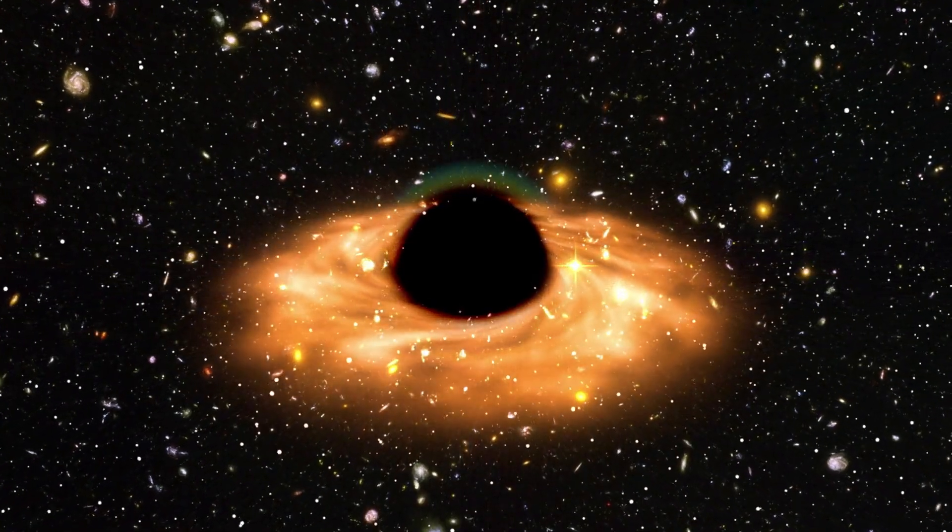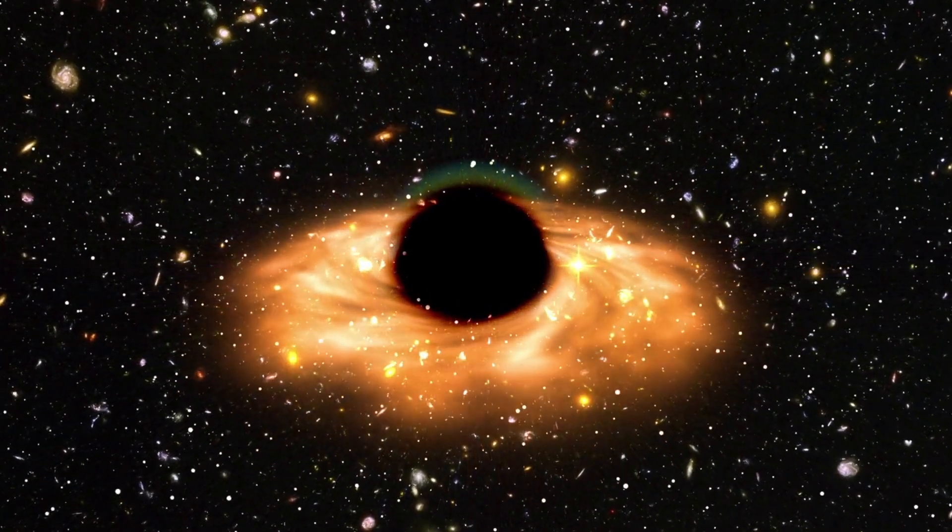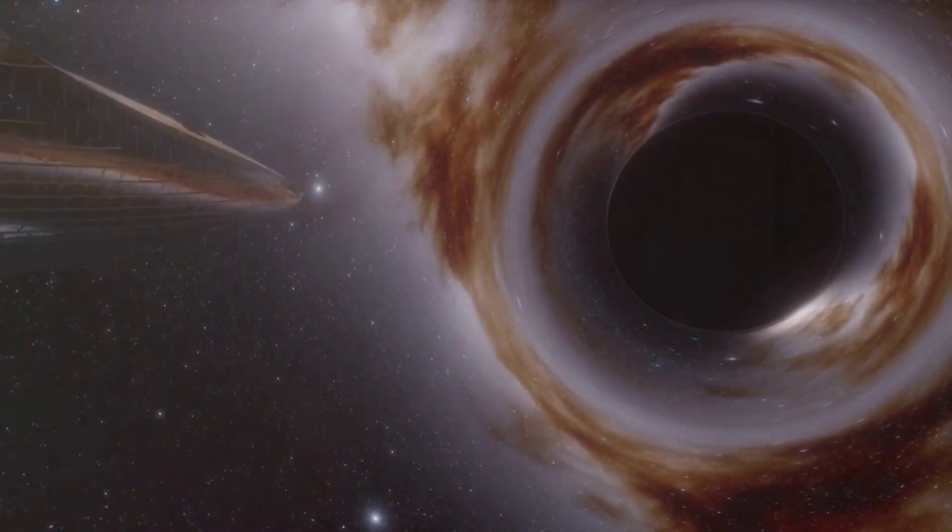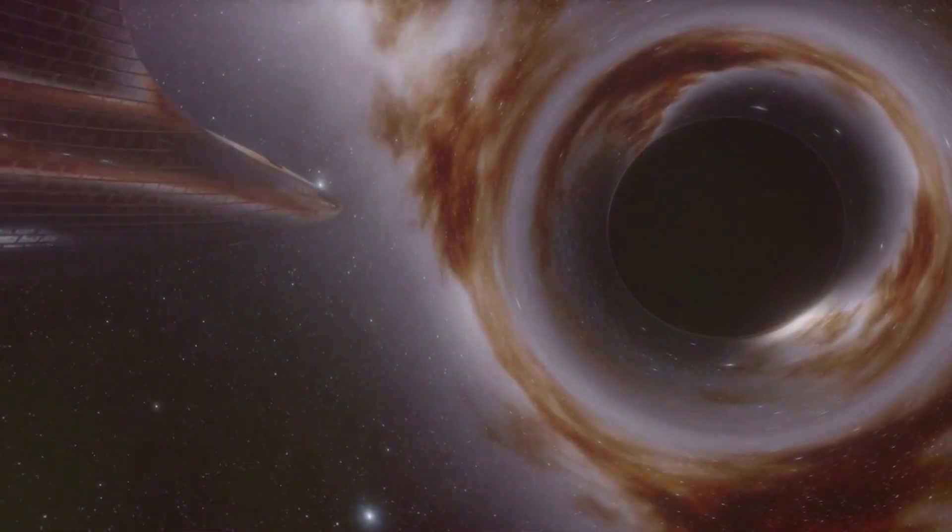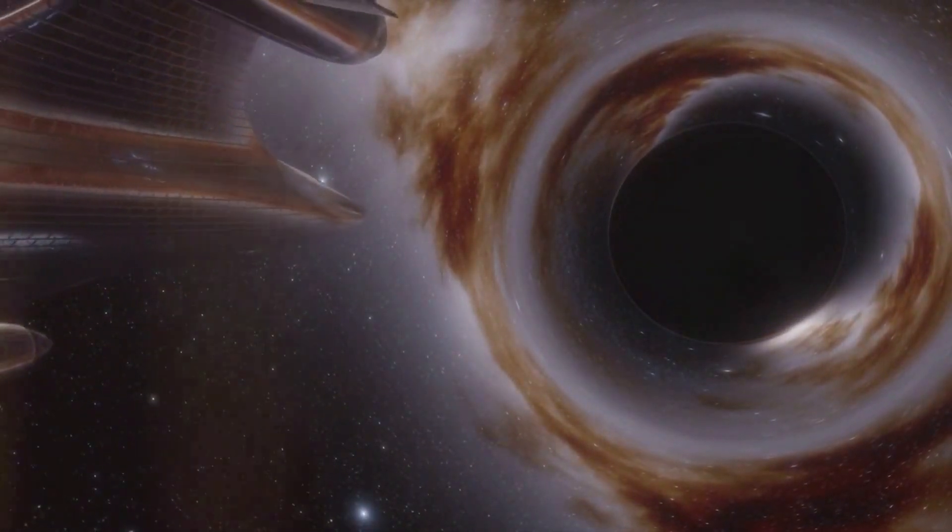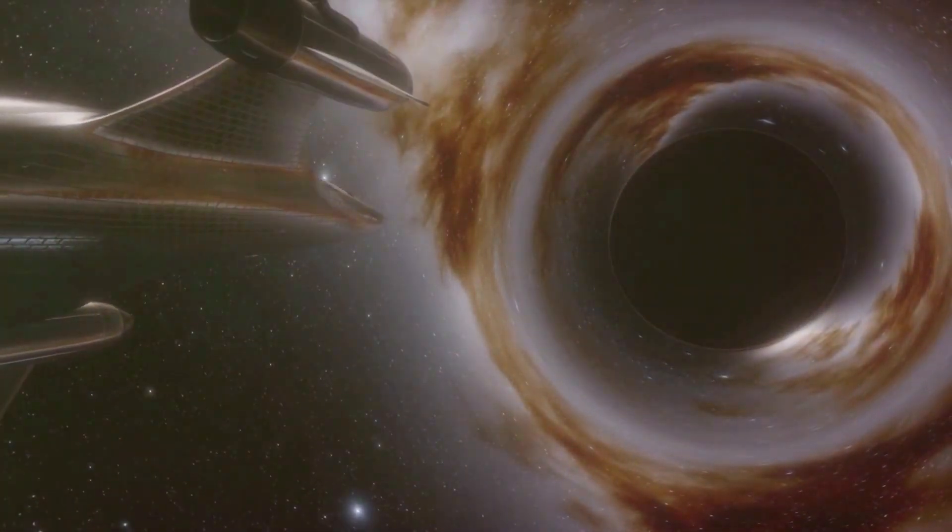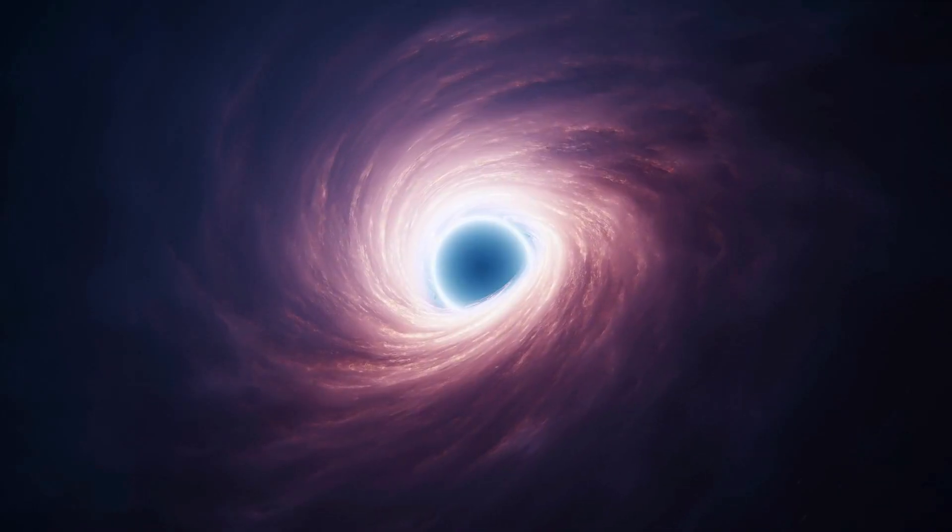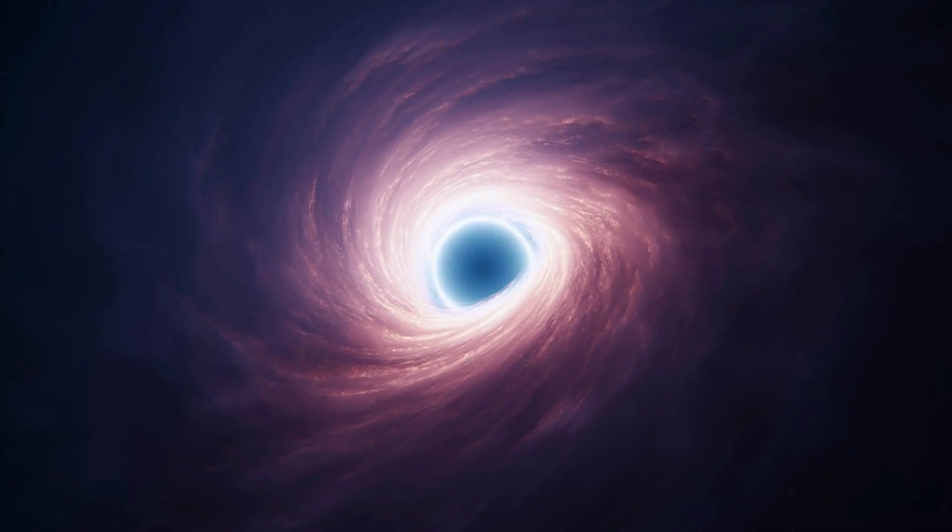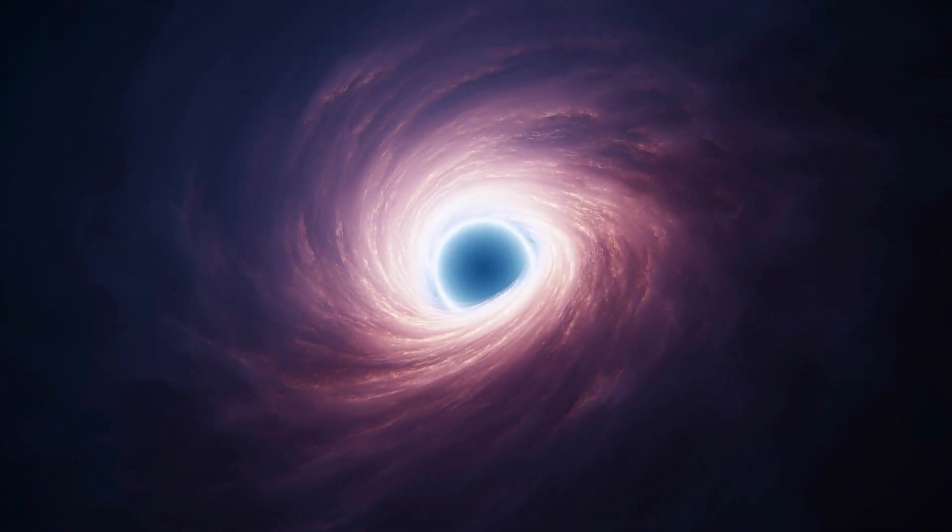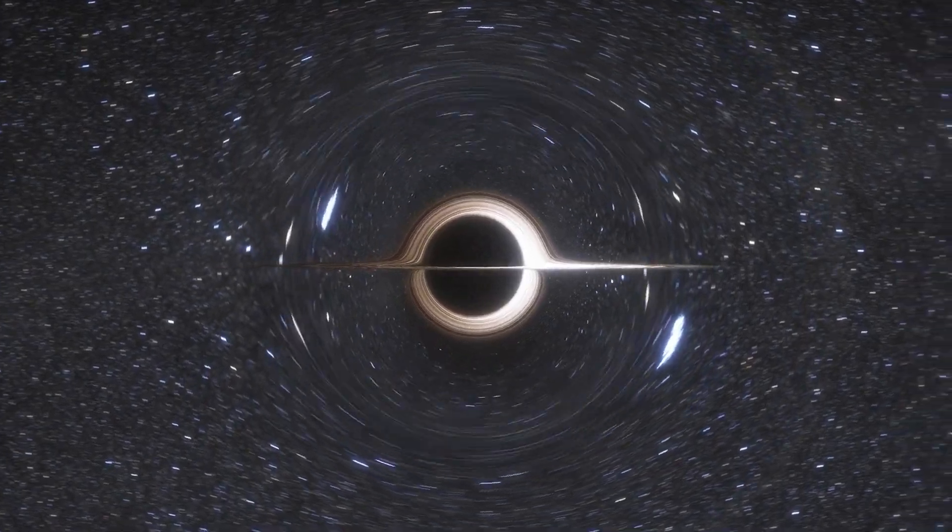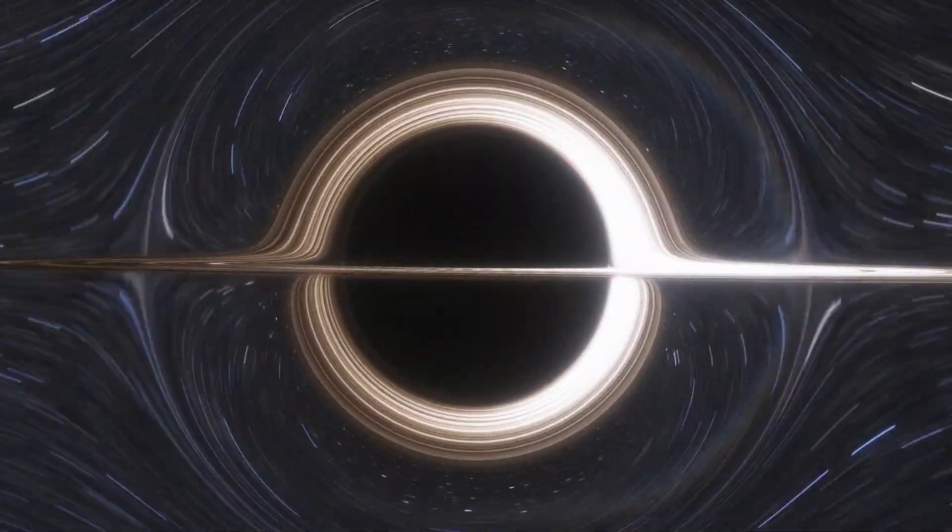Once an object crosses this boundary, it is destined to be consumed by the black hole, adding to its mass and further increasing its gravitational pull. Thus, the singularity and the event horizon together form the defining features of a black hole, shaping its behavior and interactions with the surrounding universe.